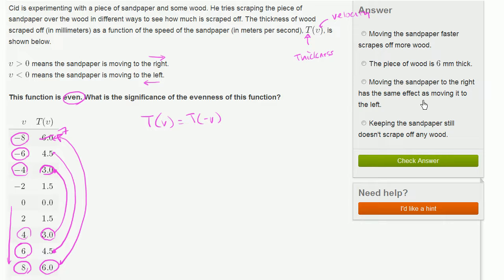Moving the sandpaper to the right has the same effect as moving it to the left. Well that seems pretty close to what I had said earlier. That for a given speed to the right or to the left, we get the same amount that is taken off of the piece of wood. So this looks like our answer.